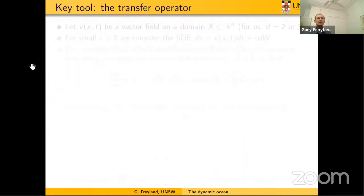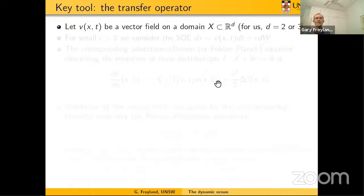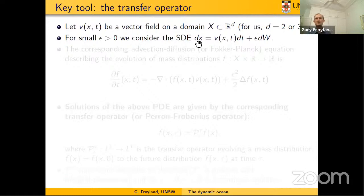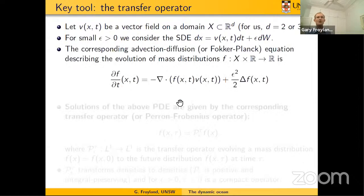The key tool I'm going to use is the transfer operator. I have a time-dependent velocity field on my domain. x is either two or three dimensional — think of it as the surface of the ocean or a layer in the ocean. For small epsilon, I consider a standard SDE: I have my drift term and then Brownian motion. The ocean currents are primarily effective and there's a small amount of diffusion happening at a relatively small scale.